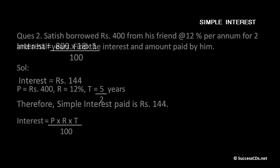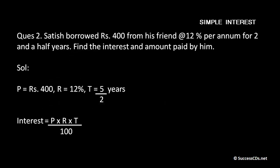Let's check out another example. Satish borrowed rupees 400 from his friend at the rate 12% per annum for two and a half years. Find the interest and amount paid by him. Now this is a tricky question. Why?